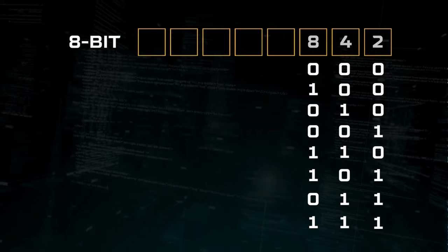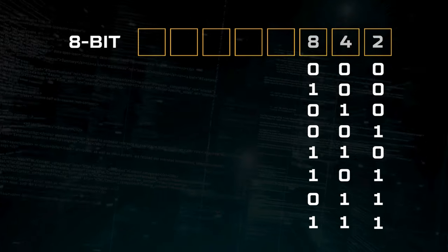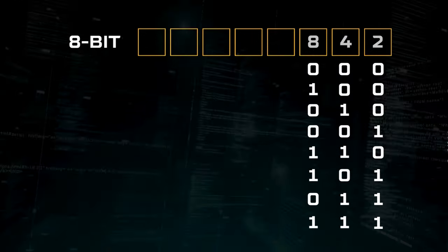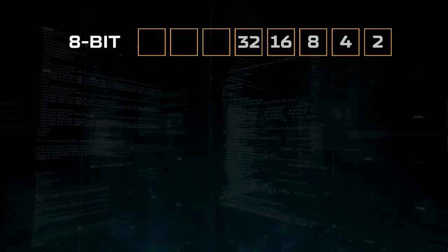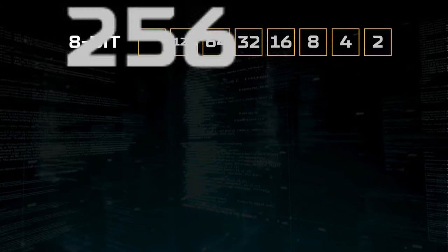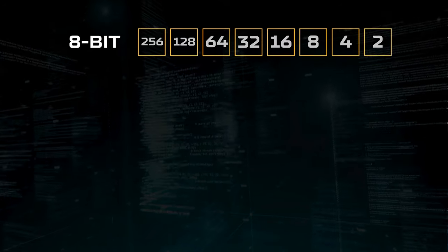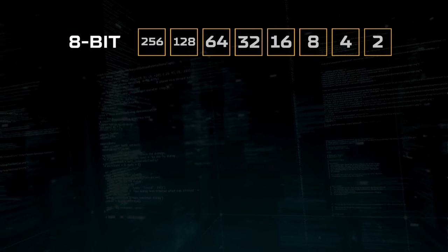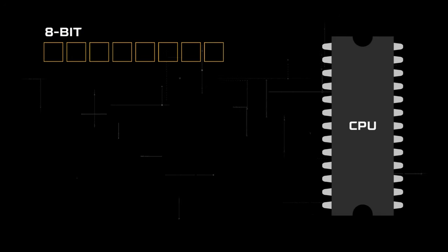So it's safe to assume that we can have 2, 4, 8, 16, 32, 64, 128 and a total of 256 combinations of 1s and 0s available to us.